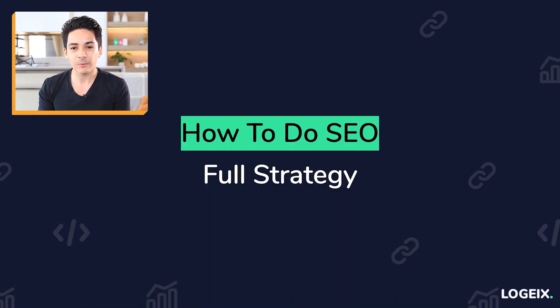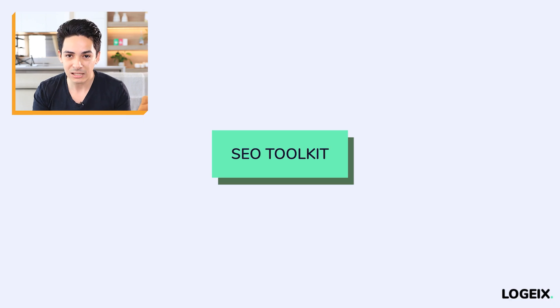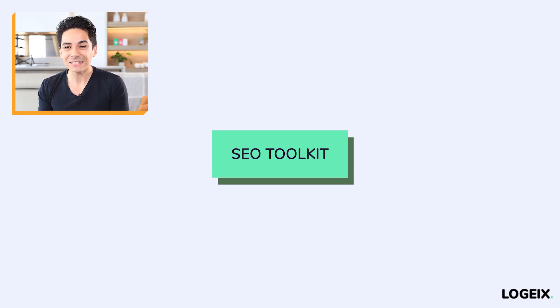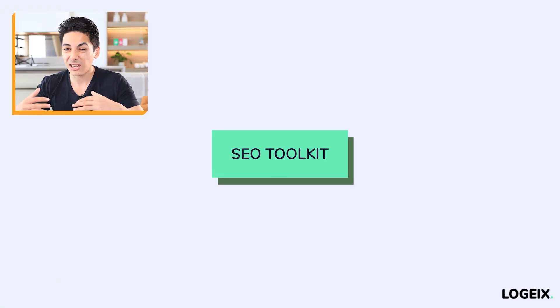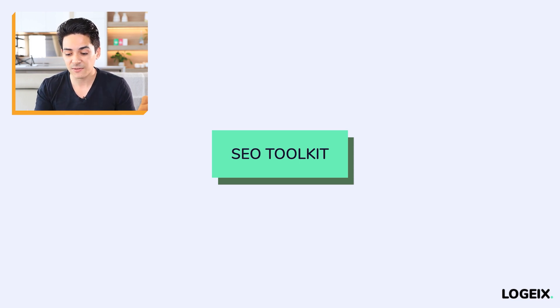Now what I'd like to start with is going through my SEO toolkit — the tools I recommend you need to get into this process. These tools can change over time as new tools come up and improve, but these are the current tools I'm using. In the future you can look them up, and if you're on a tighter budget you can try to find cheaper or even free alternatives.